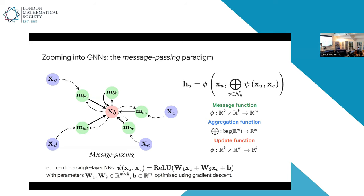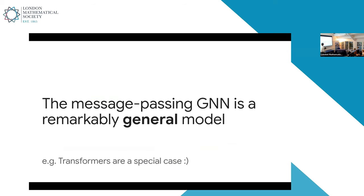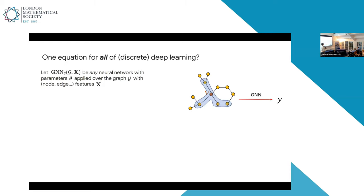In reality, these psi and phi functions are just standard fully connected neural networks. For example, psi might be a single layer neural network with a linear transformation applied to the sender and the receiver, plus a learnable bias vector, and you apply your favorite non-linearity like the rectified linear unit. The only parameters you have to learn are the W matrices and the bias vector, and you can optimize these using gradient descent much like you would in any other architecture. This message passing GNN equation is a remarkably general model. You can use it to express a lot of other things, including transformers as a special case. I'm even willing to go as far as to say this is one equation that can describe all of discrete deep learning.